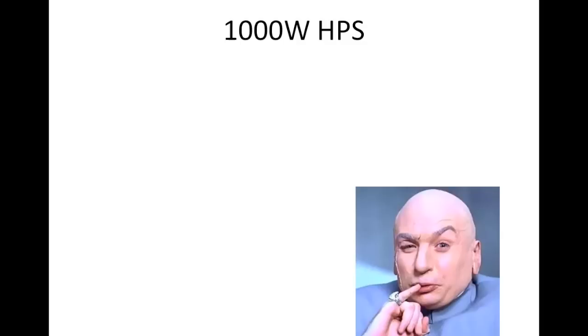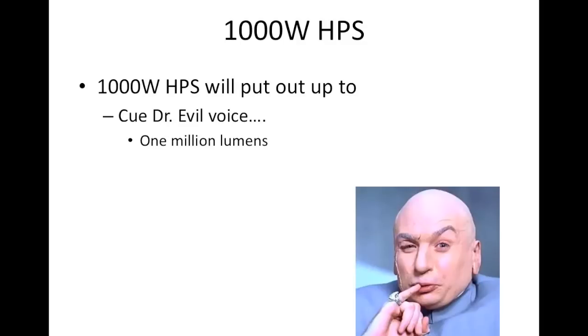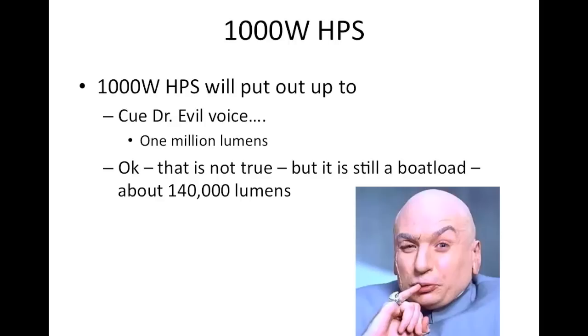Now back to the question about high-pressure sodium. A thousand-watt high-pressure sodium lamp has a lot going on — it's got the big filament, it's getting really hot. To the specific question of how many lumens a high-pressure sodium lamp produces: a high-pressure sodium lamp has — cue the Dr. Evil voice — one million lumens. Well, that's not quite right; it actually has less, but still a lot. Typically a thousand-watt high-pressure sodium might have 140,000-plus lumens, which is a lot. It has to, though, because it's producing a lot of light that plants don't need.